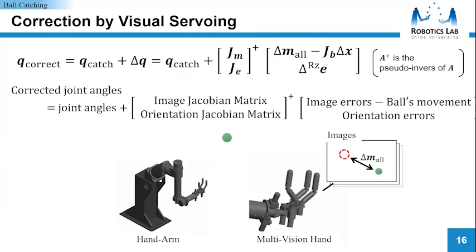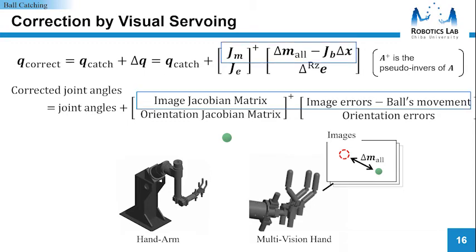The proposed catch position correction method is expressed in this equation. Q-catch is the desired joint angle calculated by estimated ball trajectory. And the corrected joint angle, Q-correct, is obtained by adding the correction value, delta-Q, from the multi-vision hand. This correction algorithm consists of two controls. The first control is image-based visual servoing of the multi-vision hand. Delta-m is error of the ball projected on the image and desired position on the image. J delta-X is correction value of the movement of the ball itself. And J_m is Jacobian matrix related to joint angle. This control will eliminate the error delta-m on the image.